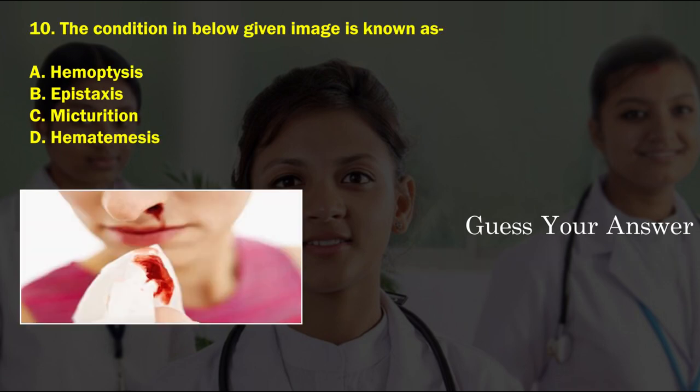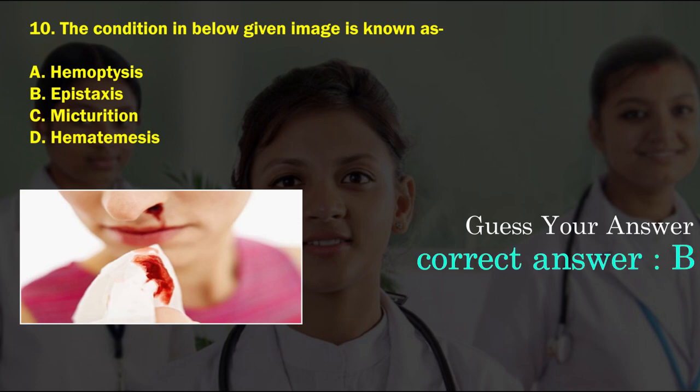The condition in the below given image is known as — option A: hemoptysis, option B: epistaxis, option C: micturition, option D: hematemesis. The correct answer is option B, epistaxis.